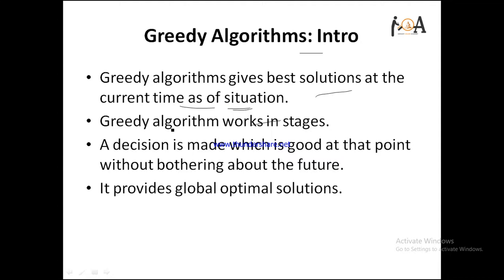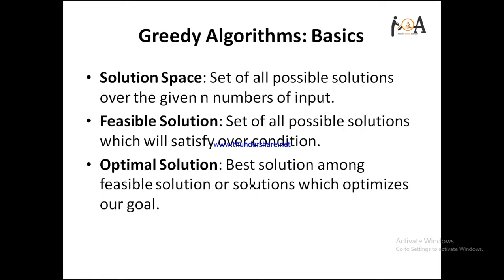The greedy algorithm works in stages. After each stage it produces a local optimum solution, and overall it gives a global optimum solution. A decision is made which is good at that point without bothering about the future — it finds the best profit in the present condition and provides a global optimal solution.